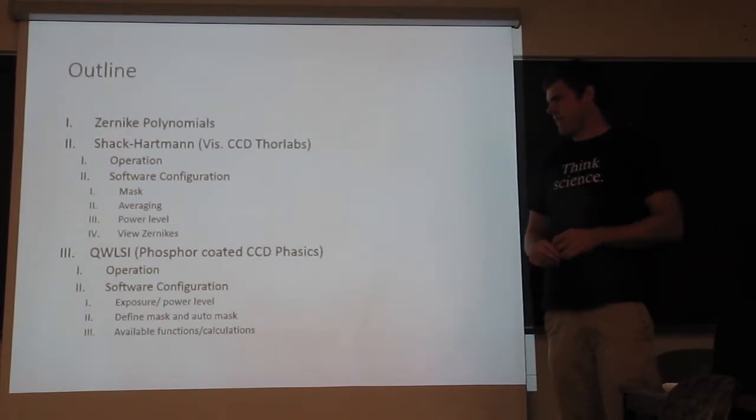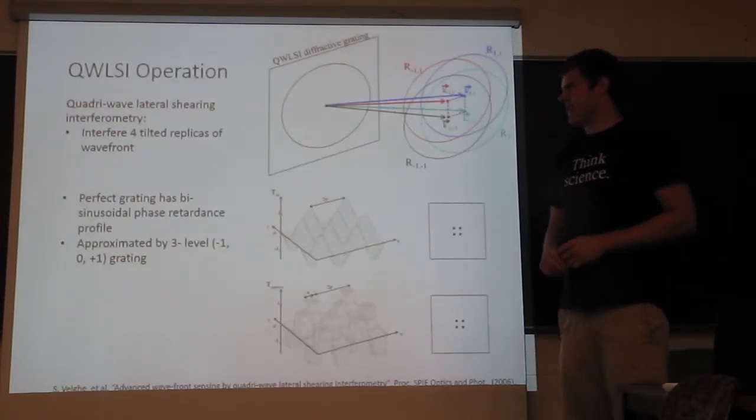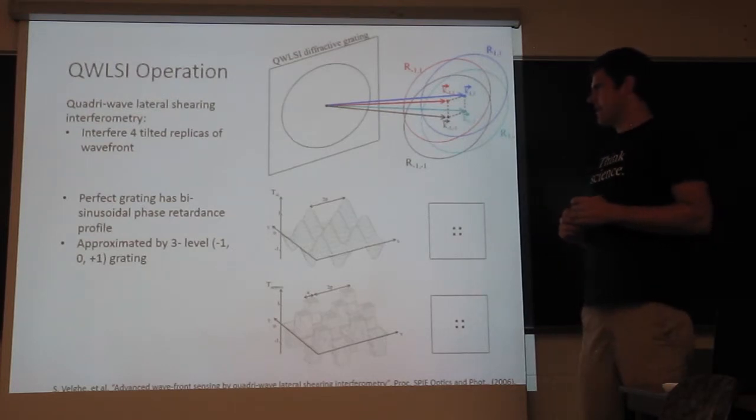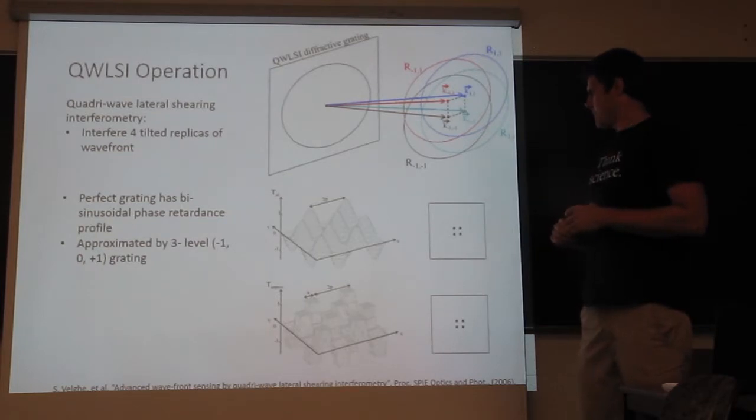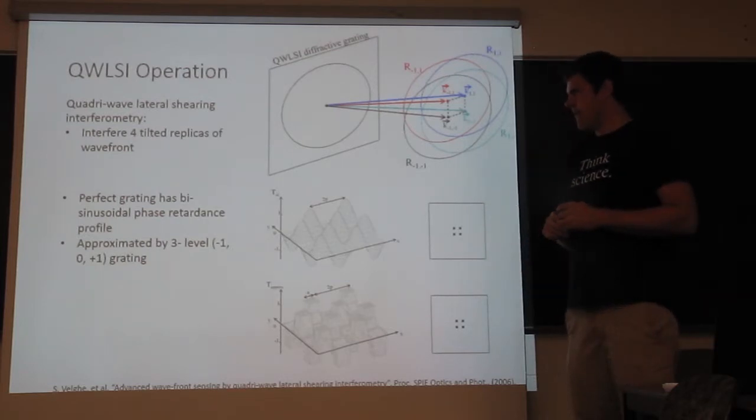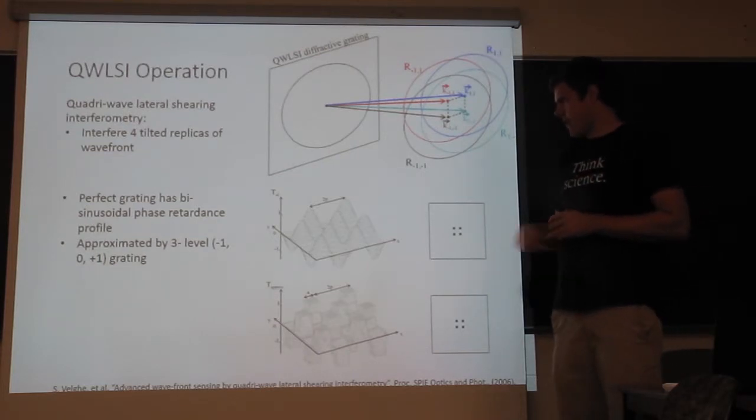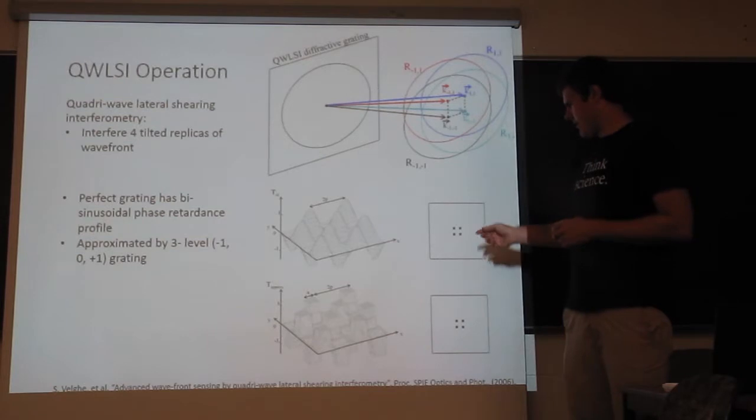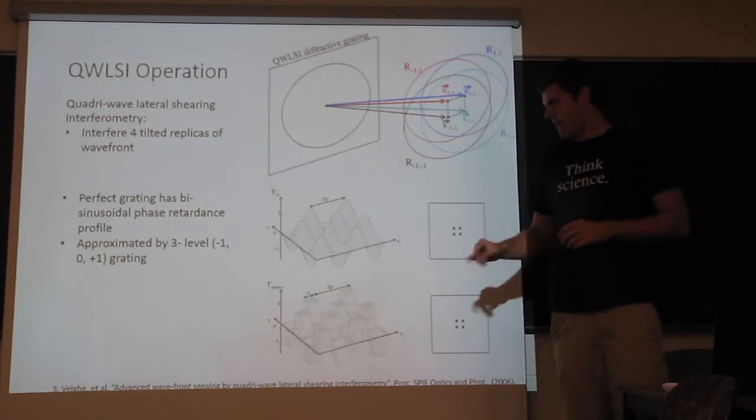Okay, so next we'll talk about the quadri-wave lateral shearing interferometry. So what this is, is instead of a microlens array, you have a diffraction grating, which makes four copies of your beam that are slightly displaced. So the way they do that is they have a phase profile that approximates a bi-sinusoidal grating, so you get four Dirac spikes, or as close as possible as you can get using etching in two different levels to give you a pi plus and minus pi phase shift.